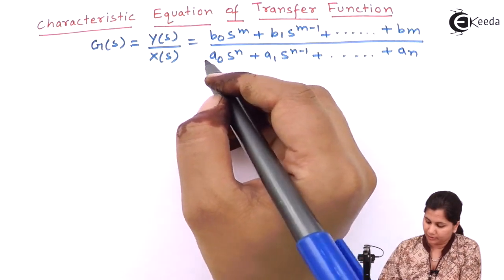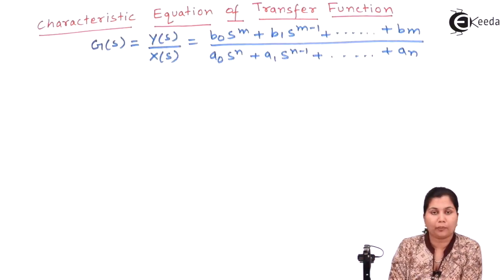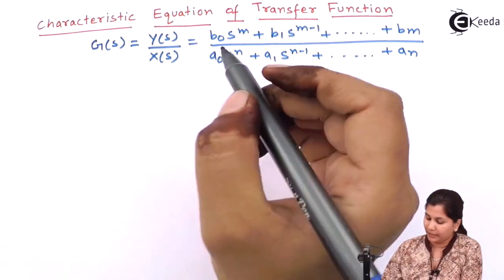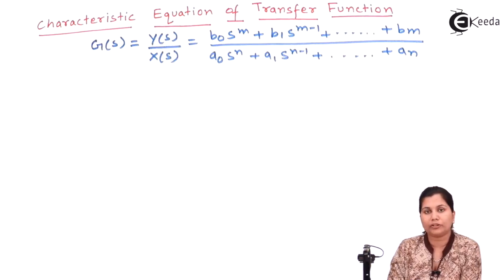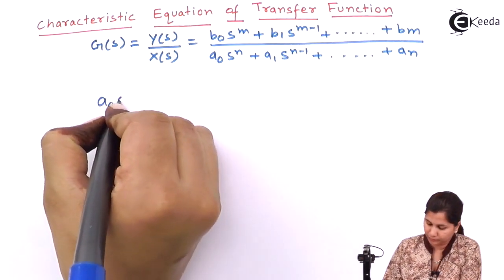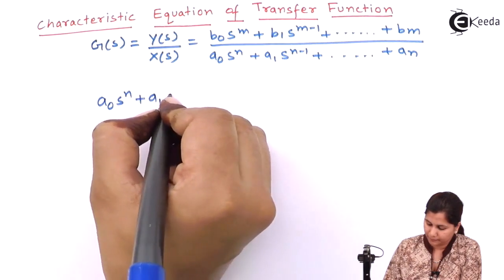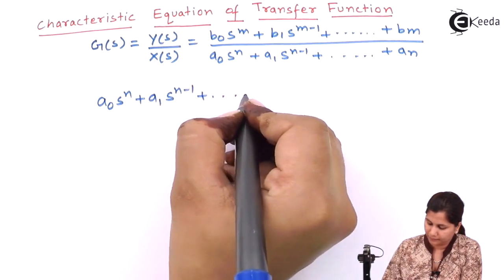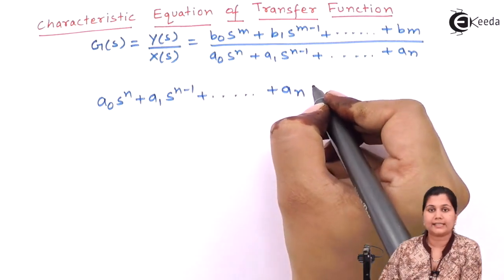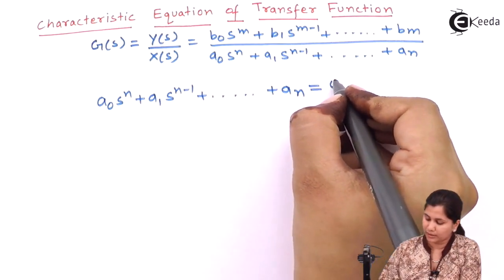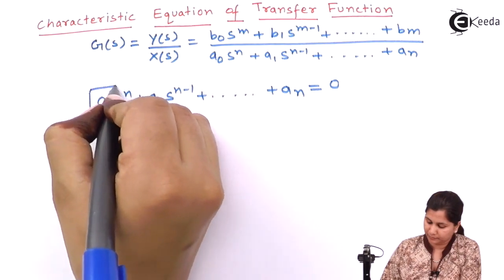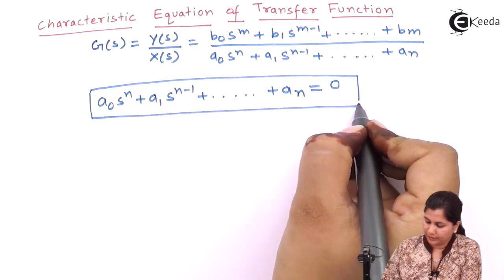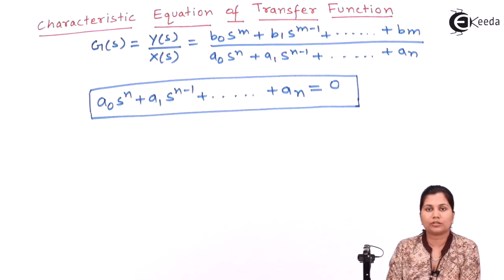This is the transfer function. If we take the denominator polynomial of the transfer function, it is given in terms of S. If we equate this denominator polynomial to zero, then we will obtain an equation. This equation which we have obtained is called the characteristic equation of a transfer function.